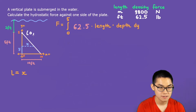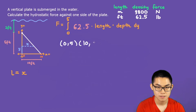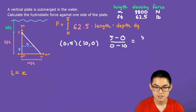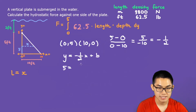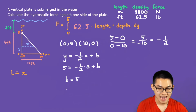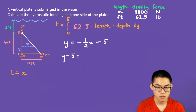From the diagram, we know this point is (0, 5) and this point is (10, 0). To find the slope, we calculate (5 minus 0) over (0 minus 10), which gives us 5 over negative 10, equal to negative one-half. Using the slope formula, y equals negative one-half times x plus b. Substituting in the point (0, 5): y is 5, x is 0, so b equals 5. The equation is y equals negative one-half x plus 5.